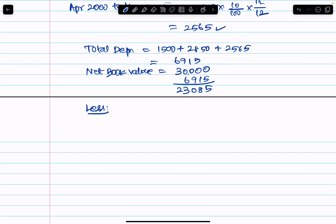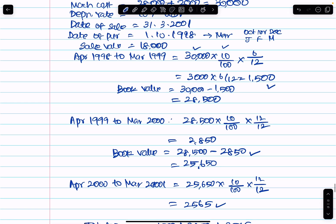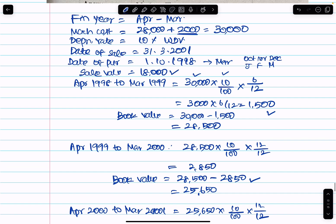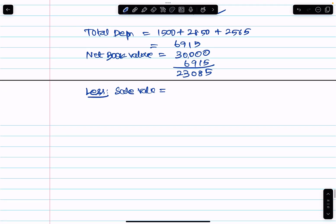Less the sale value of $18,000. Since book value of $23,085 is greater than selling price of $18,000, there is a loss on sale. Loss equals $23,085 minus $18,000, which equals $5,085.